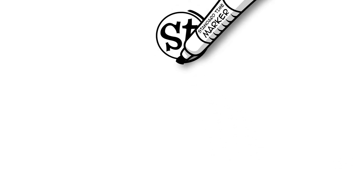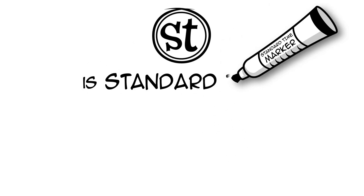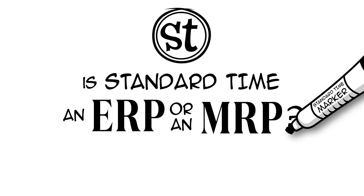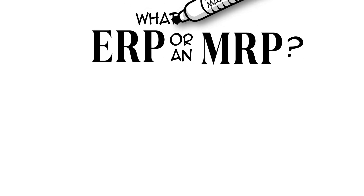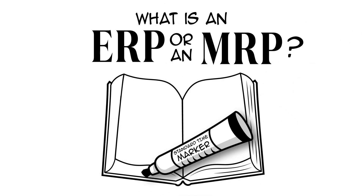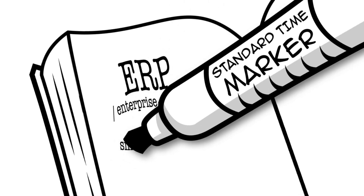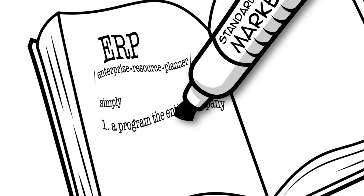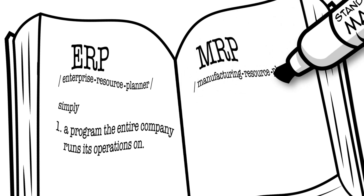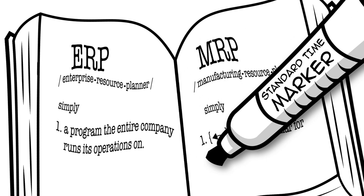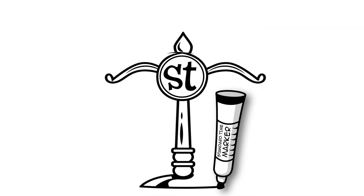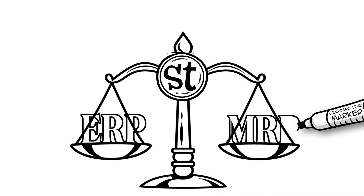Here is an interesting thing people sometimes ask: is Standard Time an ERP or an MRP? Well, the answer is sort of. Actually, what is an ERP or an MRP anyway? An ERP is an enterprise resource planner, or simply a program the entire company runs its operations on, and an MRP is a manufacturing resource planner, which is similar for manufacturing operations. So, is Standard Time an ERP or an MRP?